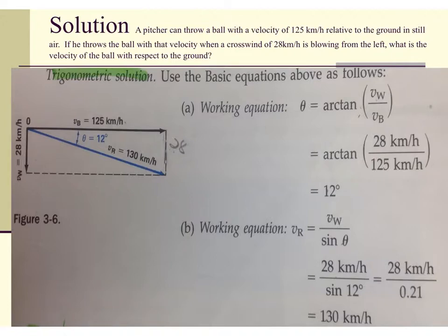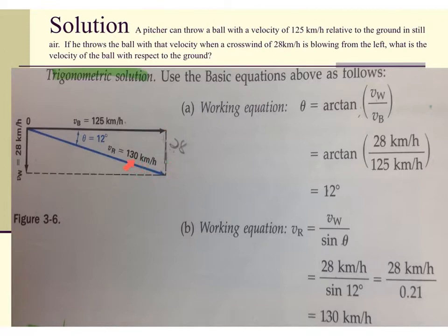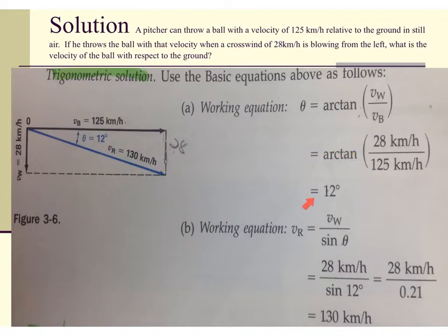Here we have a velocity problem that goes back to vector problems from earlier videos. A pitcher can throw a ball with a velocity of 125 kilometers per hour relative to the ground — that's our horizontal component. If he throws the ball when a crosswind of 28 kilometers per hour is blowing from left to right, what is the velocity of the ball with respect to the ground? We draw our vectors — 125 km/h and 28 km/h — and find angle theta using the inverse tangent: arctan of 28 divided by 125 gives us an angle of 12 degrees.